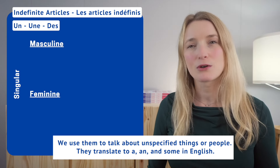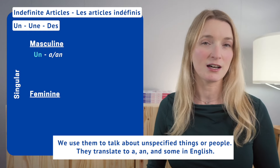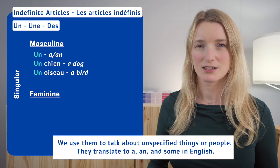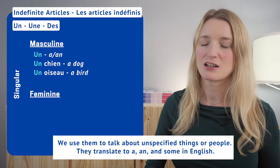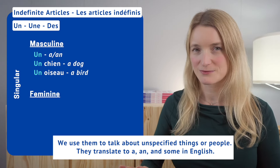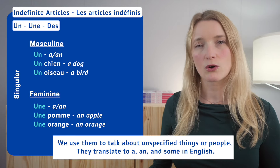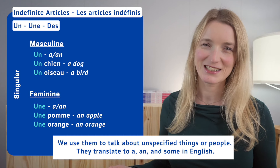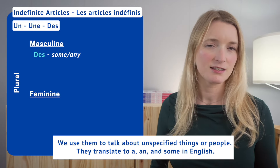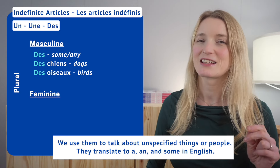Let's see some examples. Starting with singular masculine: un — for example, un chien, un oiseau. Because 'oiseau' starts with a vowel, we have a liaison: un oiseau. Then feminine: une — une pomme, une orange. And the plural is the same for both masculine and feminine: des — des chiens, des oiseaux, des pommes, des oranges.